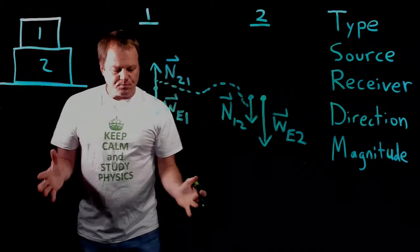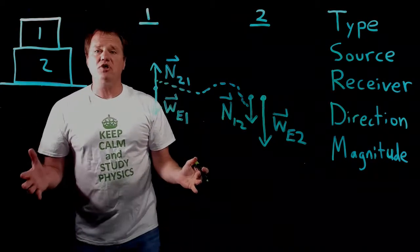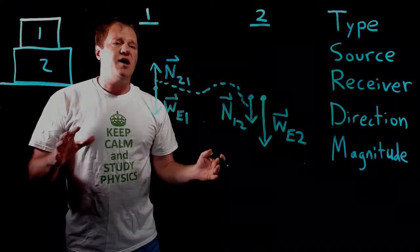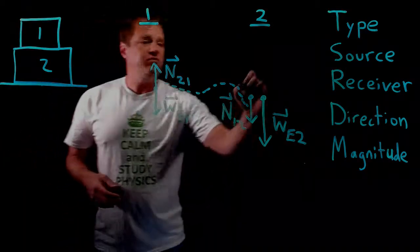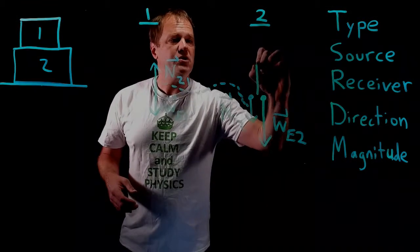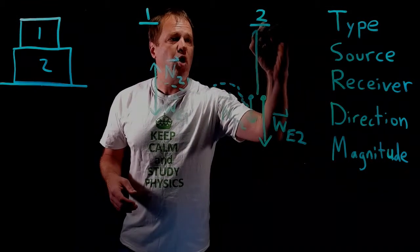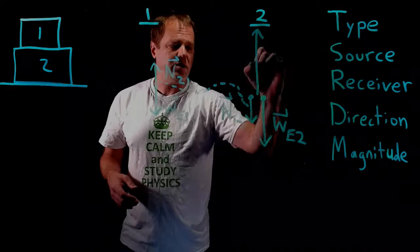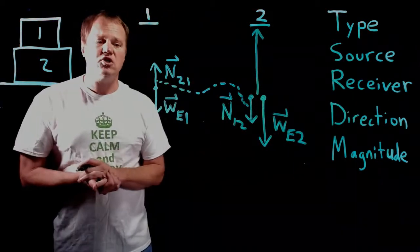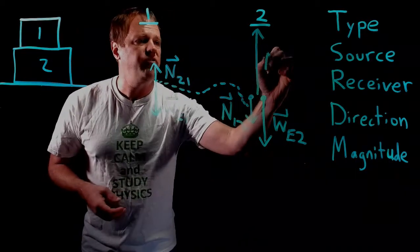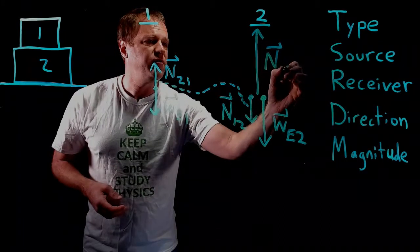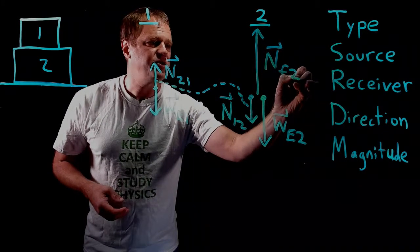Something is preventing block two from plummeting to the center of the Earth. That thing is the floor. The floor exerts an upward force which has to counteract both of these, so that's why I'm drawing it particularly long. It's equal to the sum of these two. That would be the normal force of the floor on block two.